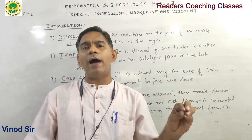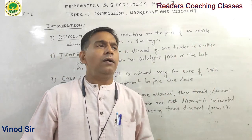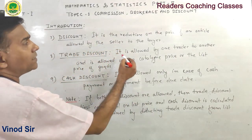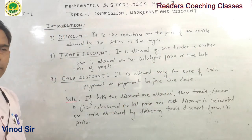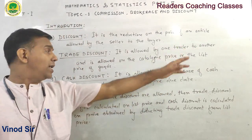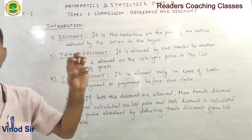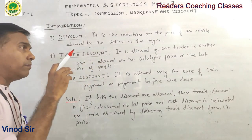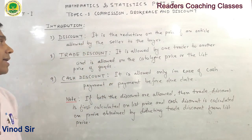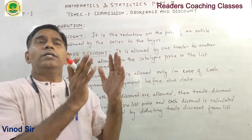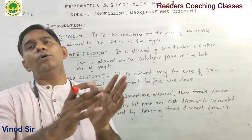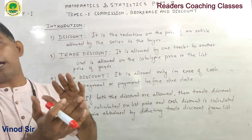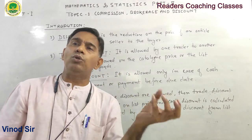Trade discount is allowed by one trader to another trader — for example, from a wholesaler to a retailer. It is allowed on the catalogue price or the list price of the goods. The seller allows the trade discount to the buyer on the catalogue price or list price.